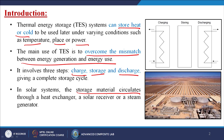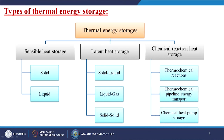In solar systems, the storage material circulates through a heat exchanger, a solar receiver, or a steam generator — that is the full overview of a thermal storage system plant. Now, thermal energy storage has been divided into three parts: one is sensible heat storage, under which solid or liquid material can work; the second is latent heat storage; and the third is chemical reaction heat storage, which includes thermochemical reactions, thermochemical pipeline energy transport, or chemical heat pump storage.